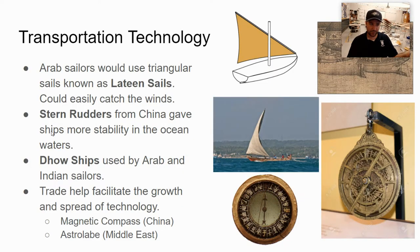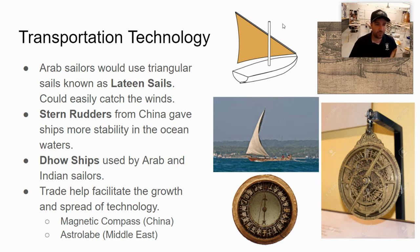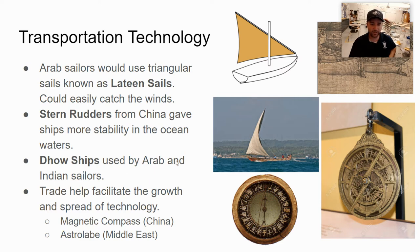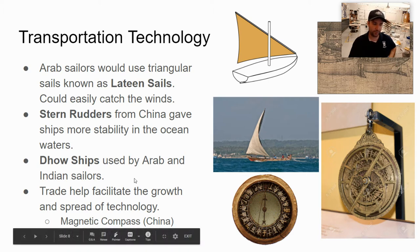Talking about trade technology: lateen sails — those triangular sails — are used all along the Indian Ocean trade networks by different groups of people because they catch the wind much faster and move ships along with all those goods. Stern rudders from China are an important invention allowing the directional movement of ships. Dhow ships are the types of ships Arab and Indian sailors use — they dominated the Indian Ocean trade network for some time.